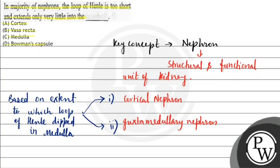What is the difference? If you ask, cortical nephron has short loop of Henle. The dip is very small and dips very little.